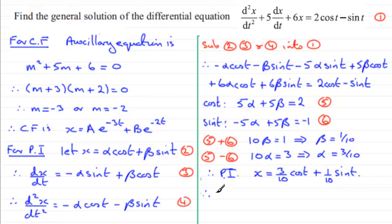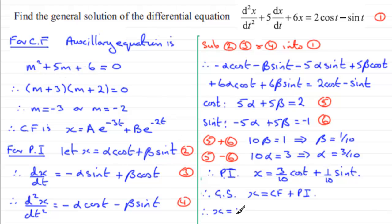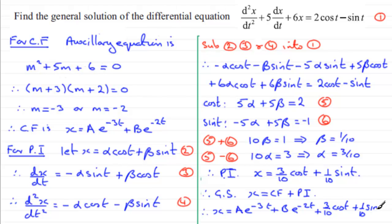The general solution (GS) is the complementary function plus the particular integral: x = Ae^(-3t) + Be^(-2t) + (3/10)cos(t) + (1/10)sin(t).